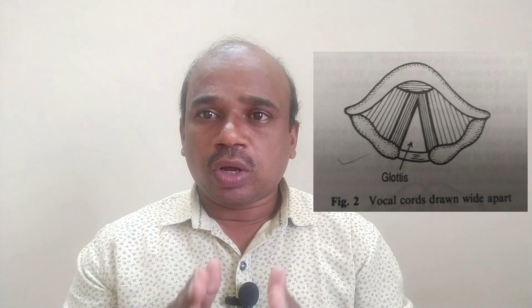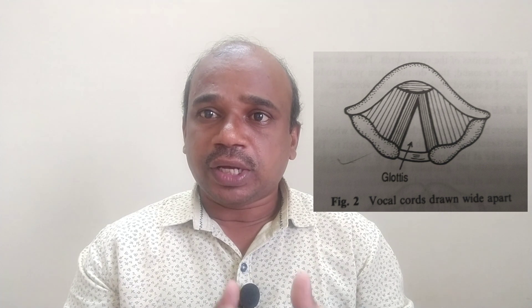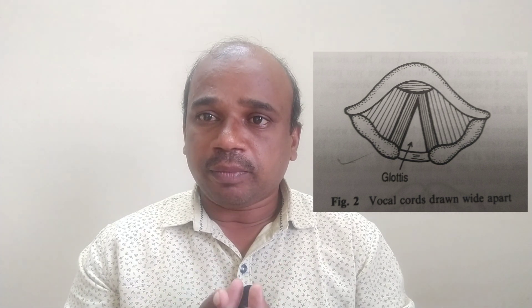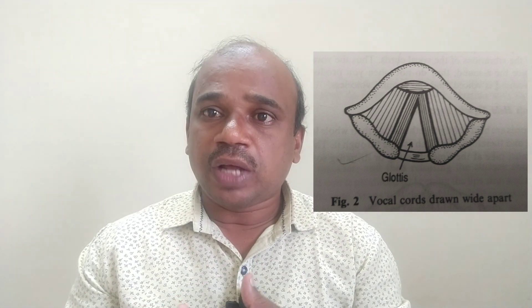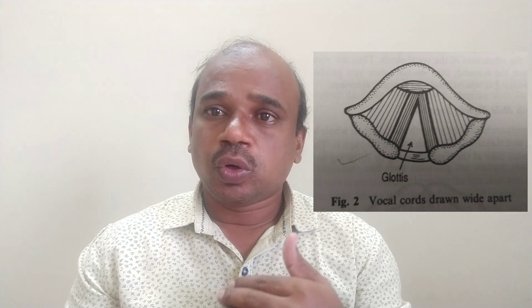Position one: vocal cords drawn wide apart. When the vocal cords are drawn wide apart, there is a wide opening between them called the glottis. Through this opening, air can pass freely without setting any vibration into the vocal cords. This is the normal position of vocal cords in the process of breathing or respiration. Speech sounds produced when the vocal cords are in this position do not have any hum sound or vibration.